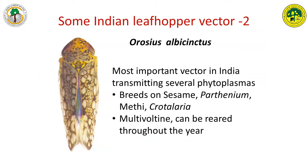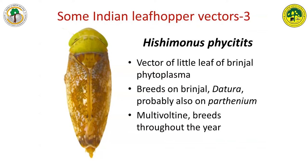The next one is Hishimonus phycitis. This is a confirmed vector of brinjal little leaf, mainly because a lot of work has been done. I still remember Dr. K. Srinivasan's work when he was an M.S. student with Dr. Chellaiah — such wonderful work on the interaction between the host plant and the vector, and what modifications are taking place. That is the kind of work we need. I would like you to go through those two or three papers they published — wonderful work.